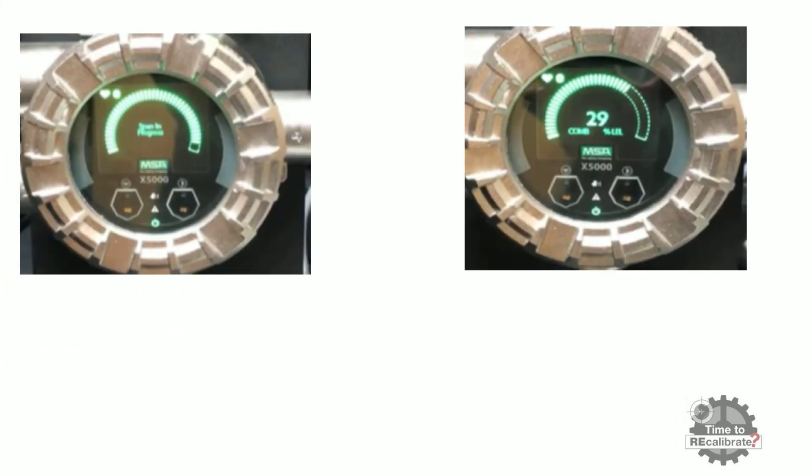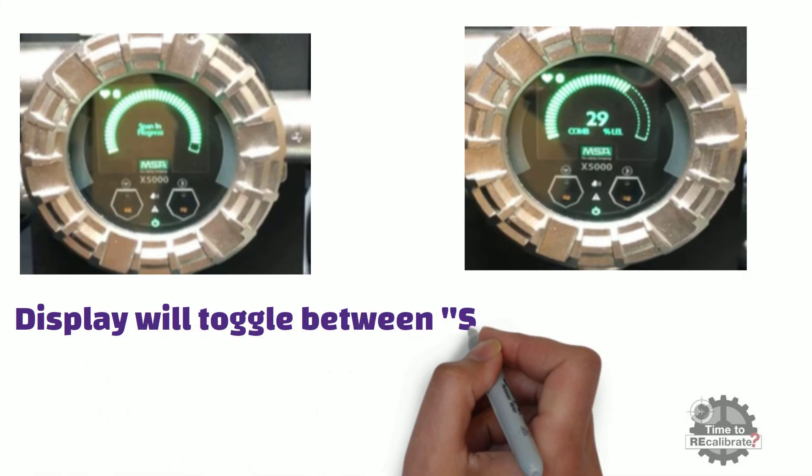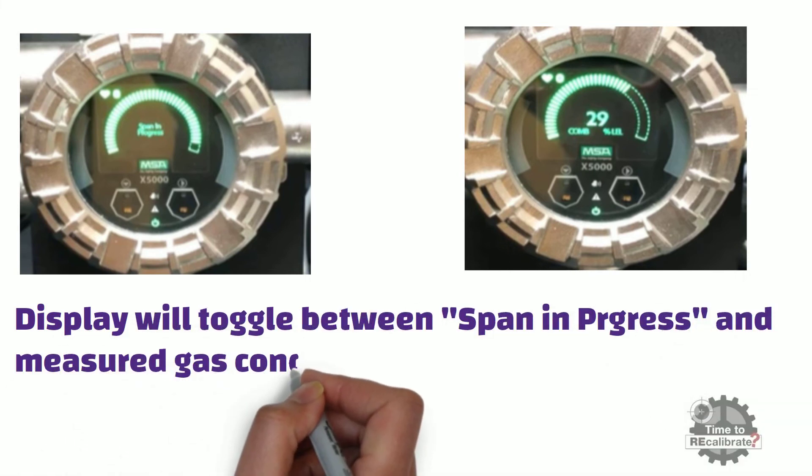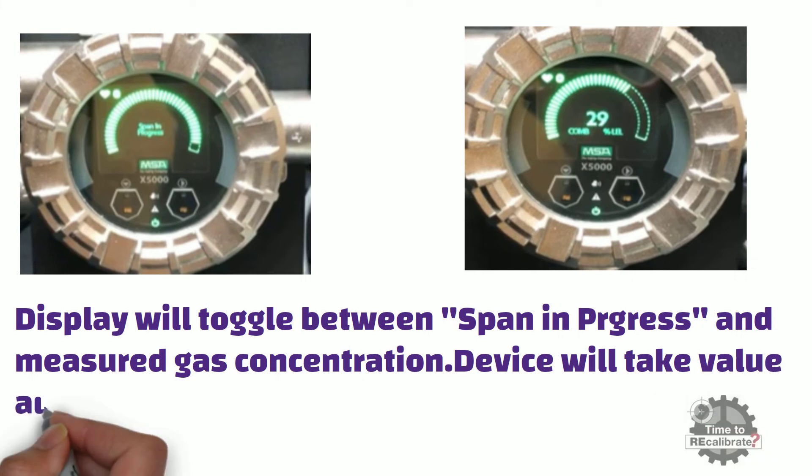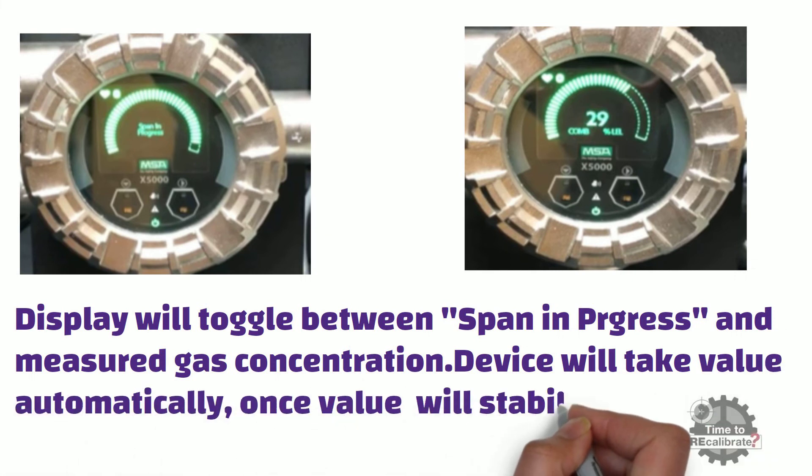As you can see from the picture, the display will toggle between span and progress and measured value of methane gas. The device will take the value automatically once the value stabilizes.